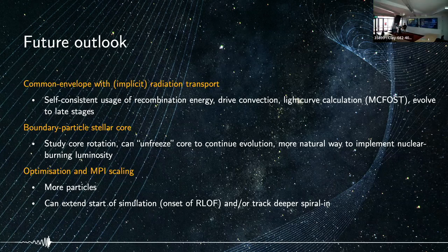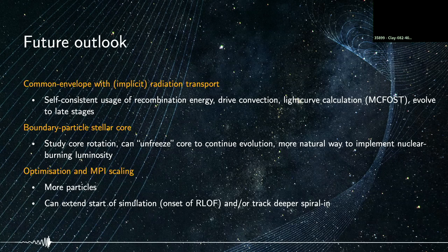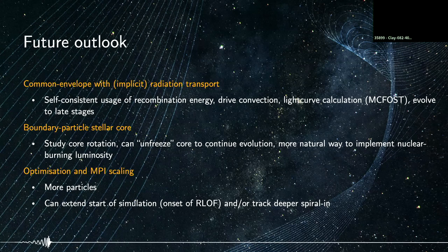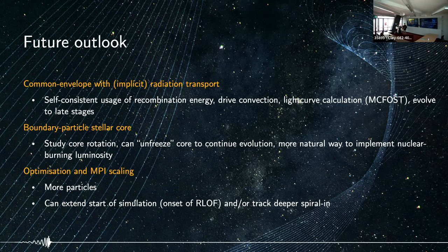Thanks for the great talk, Mike. Do we have any questions? I'm just curious — with the red supergiants and the common envelope, does your red supergiant model have any mass loss separate from the common envelope? Do you mean in the 1D model used to provide initial conditions or in the code itself?